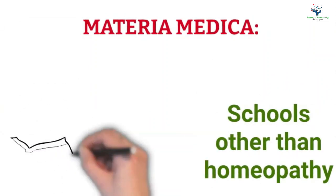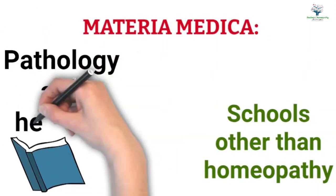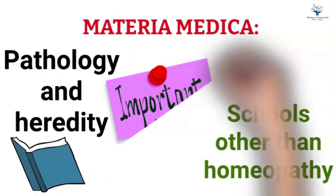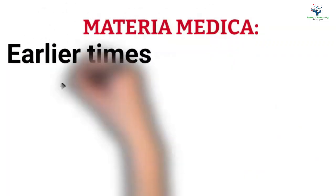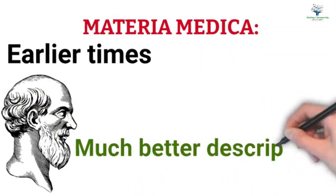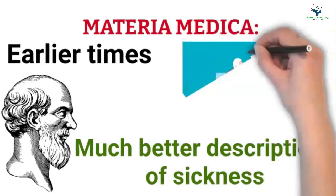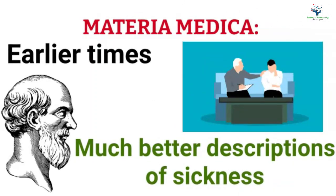However, the books of schools other than homeopathy ignore the symptomatology and emphasize on pathology and heredity. They did not give importance to the patient himself. But in earlier times when there was no microscope there were much better descriptions of sickness. He also mentions Verson and Chambers in their lectures and writings had given importance to the appearance of the patient.